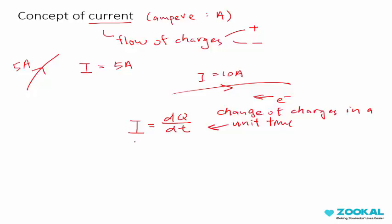I equals DQ by DT. You don't really need to memorize this. All you need to know is that I is current and the unit is ampere, which is A.